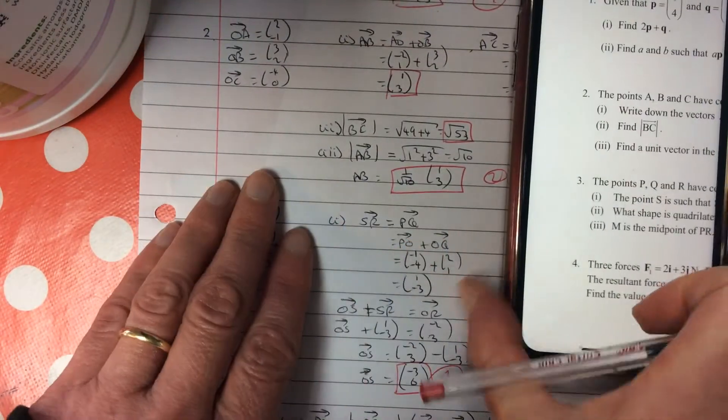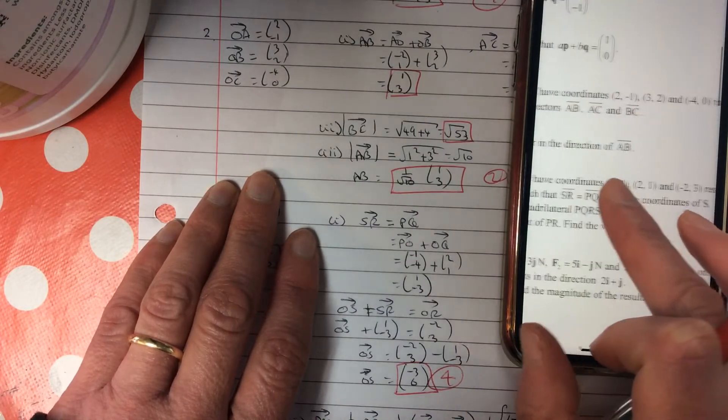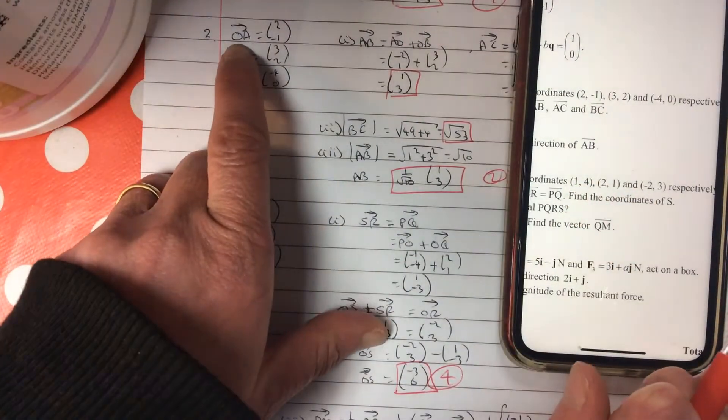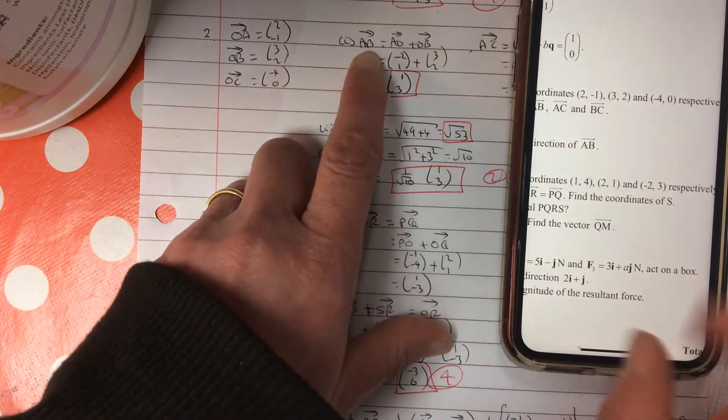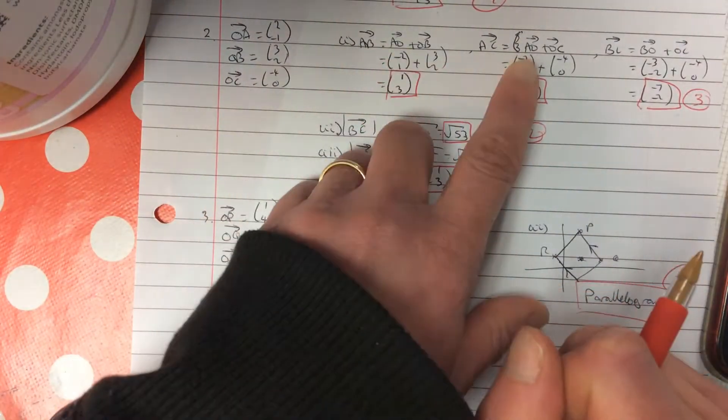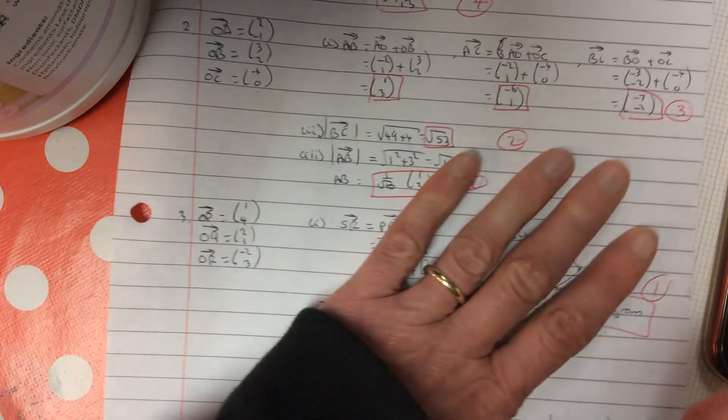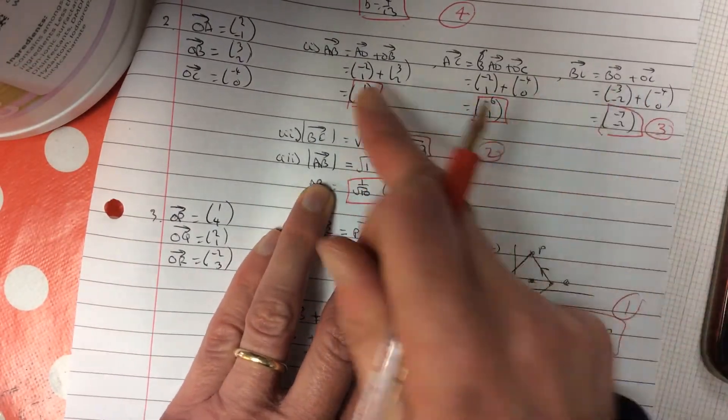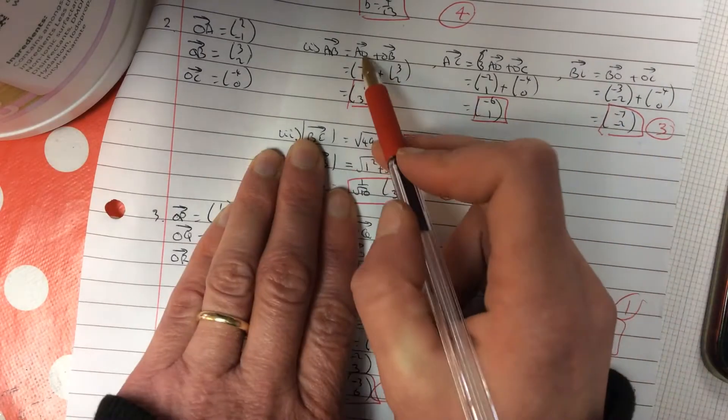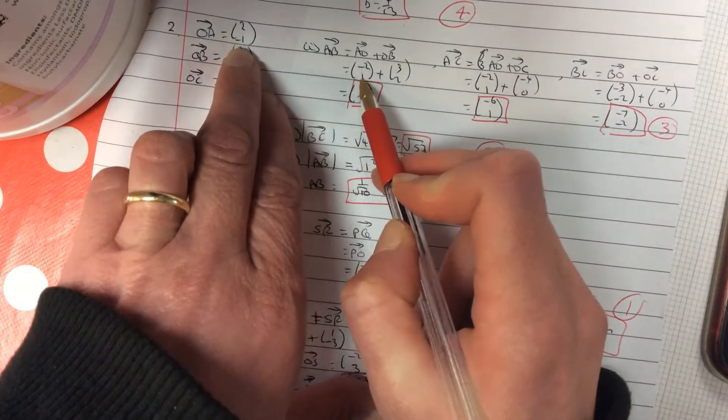OK, number 2. The points, they give you coordinates. Write them as position vectors, OA, OB, OC as columns. Then AB, hopefully you're OK going through O. AC go through your O, and BC go through O. So hopefully that's OK. Just make sure, you know, when you're going backwards, you reverse the signs of each number.